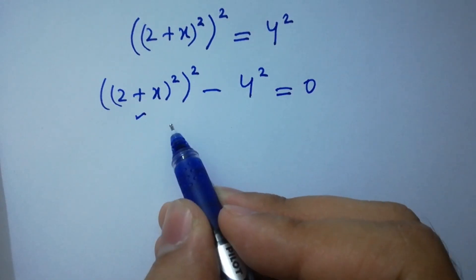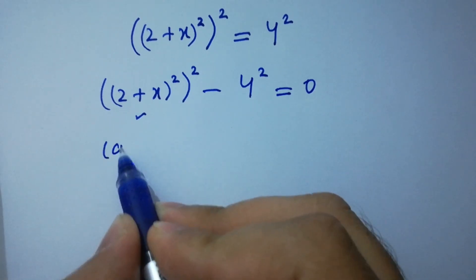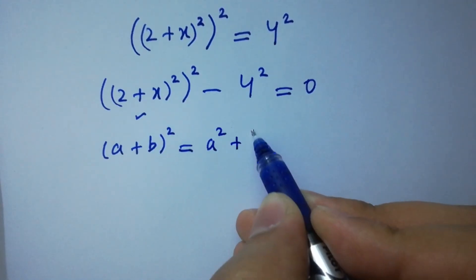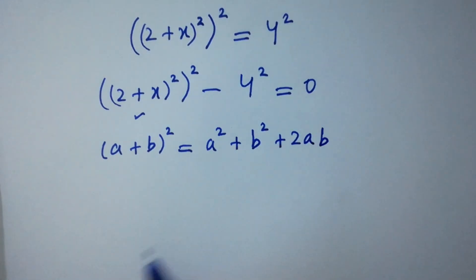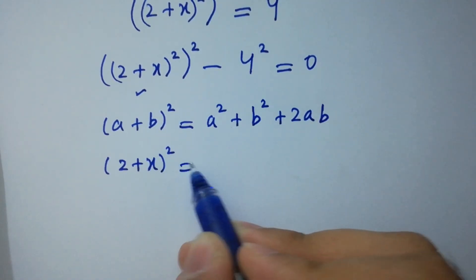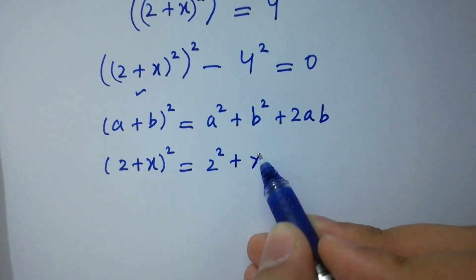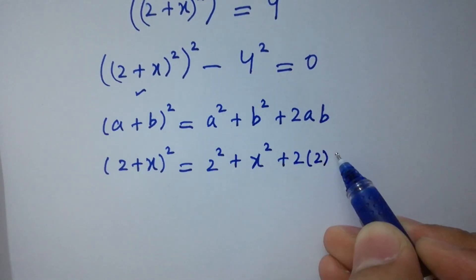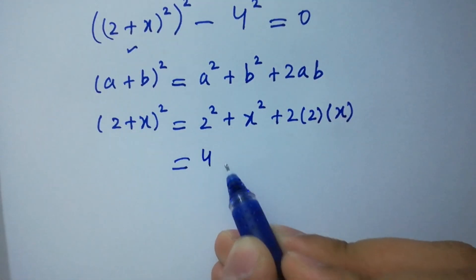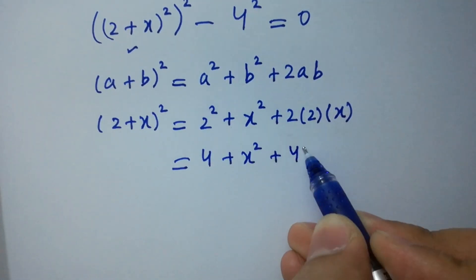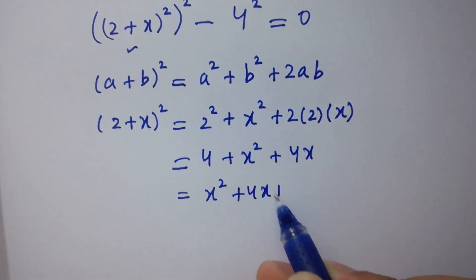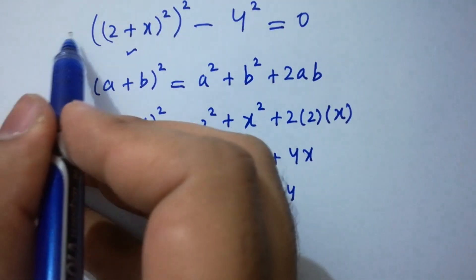So here, (2 + x) whole square — we know the formula: (a + b) whole square equals a squared plus b squared plus 2ab. Then (2 + x) whole square equals 2 squared plus x squared plus 2 times 2 times x. Simplifying: 4 plus x squared plus 4x, which is x squared plus 4x plus 4.